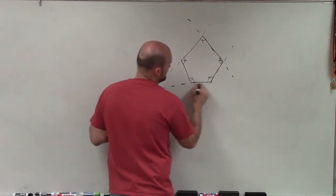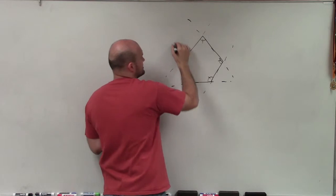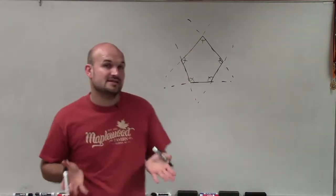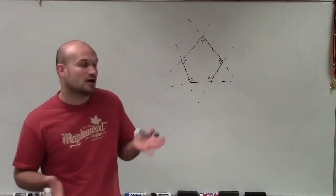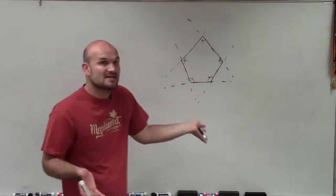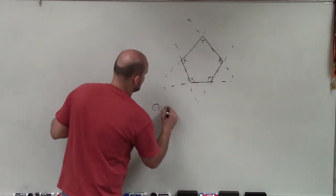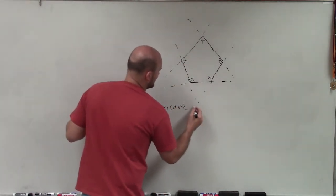And to determine that, what I can do is just draw lines that are extending the sides of the polygon and see if any of those sides are going to intersect on the interior. And since none of them do, we know that this is a concave polygon.